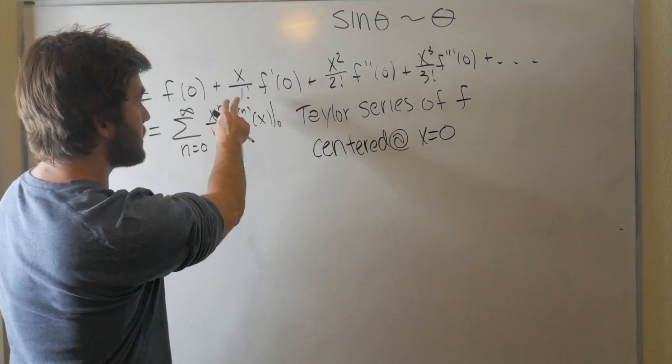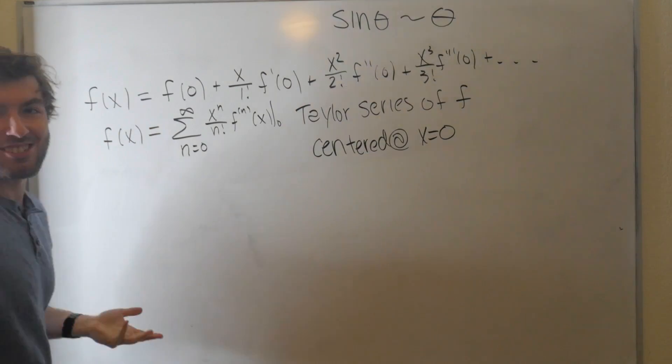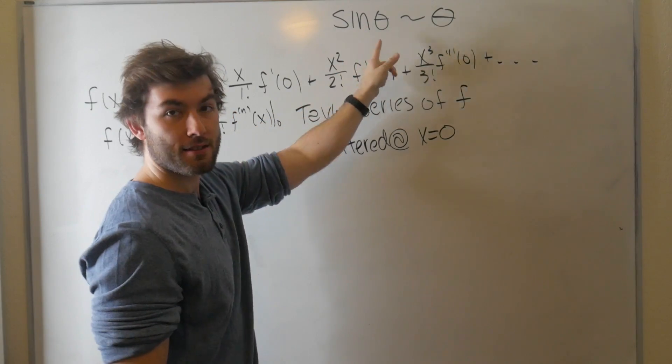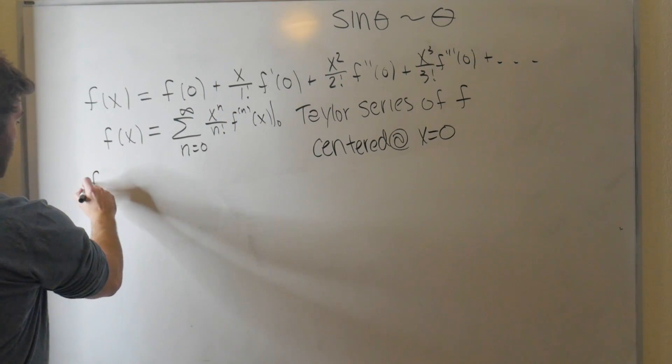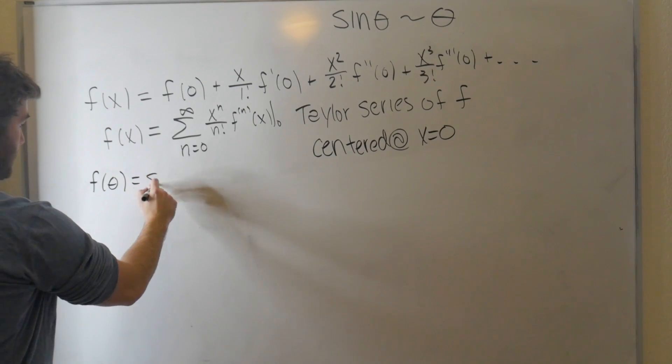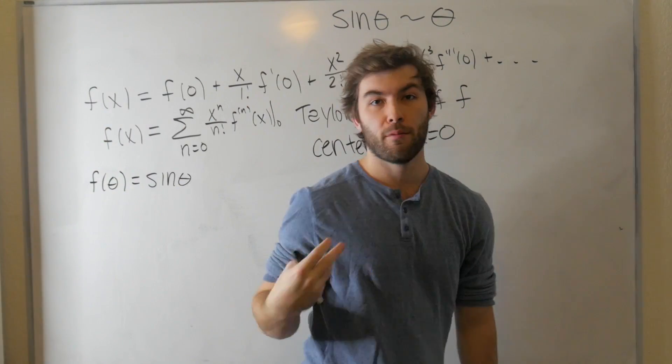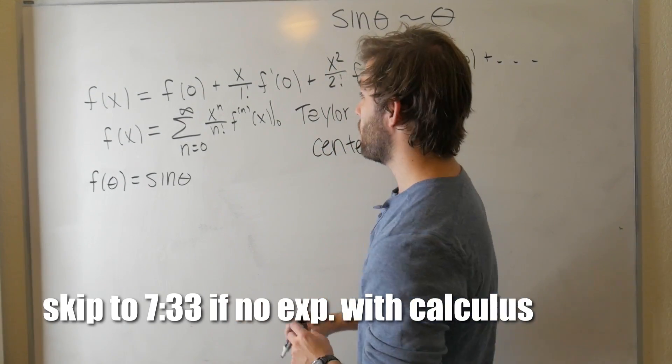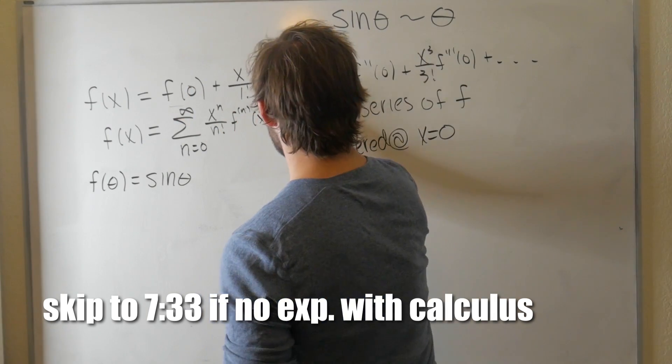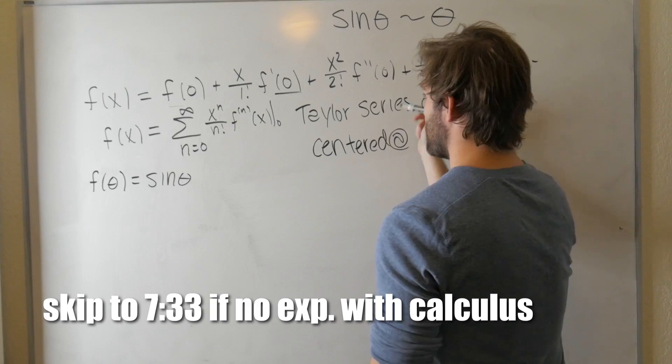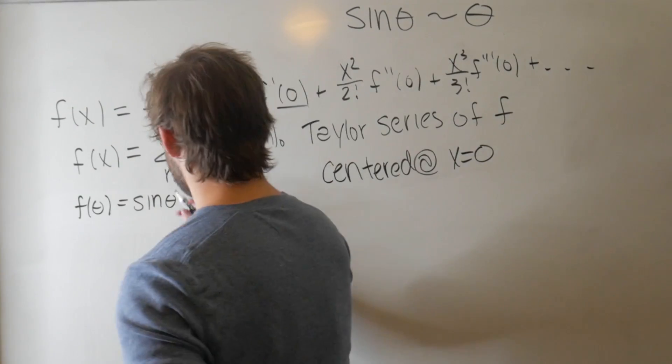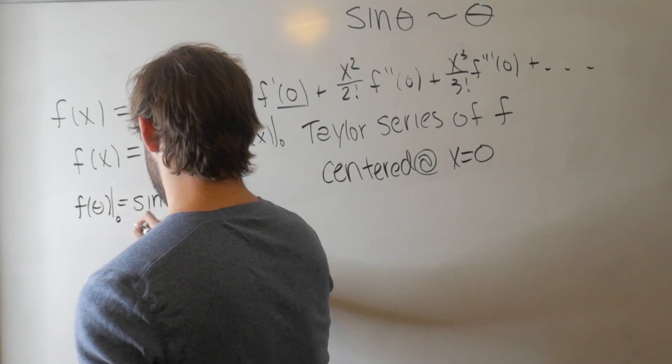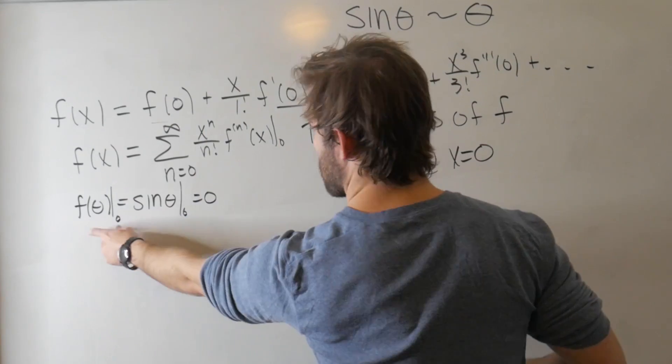The next step is we want to find out what this Taylor series is where f of theta equals sine of theta. We want to expand this. So we're interested in f of theta equal to sine of theta. How do we expand that? Now, if you're not familiar with the concept of taking derivatives and functions, you can go ahead and skip to this section of the video. All I'm going to be doing is calculating what these terms are, derivatives of sine, and then substituting it in where theta is equal to zero.